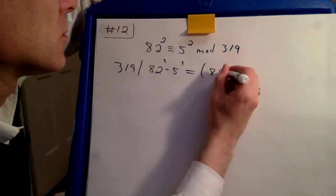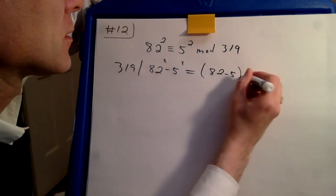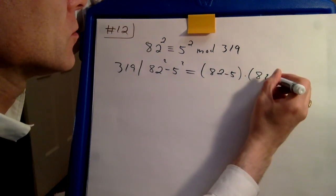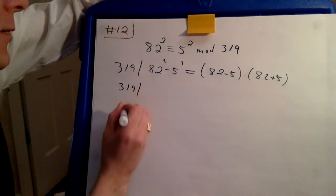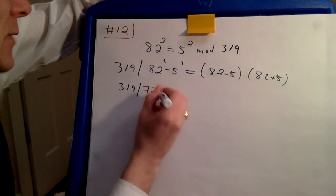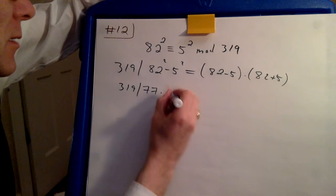This is 82 minus 5 times 82 plus 5. So we get that 319 divides 77 times 87.